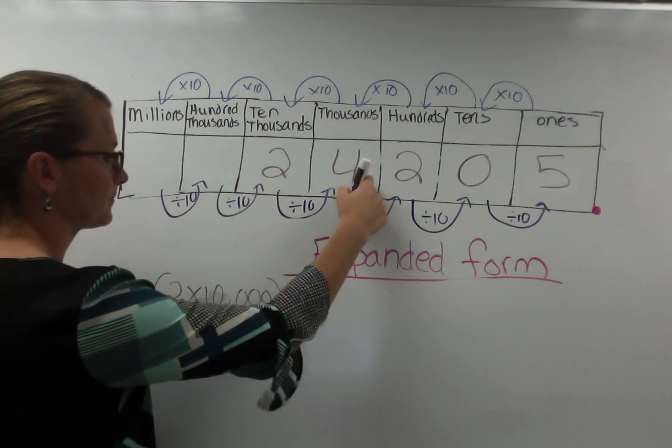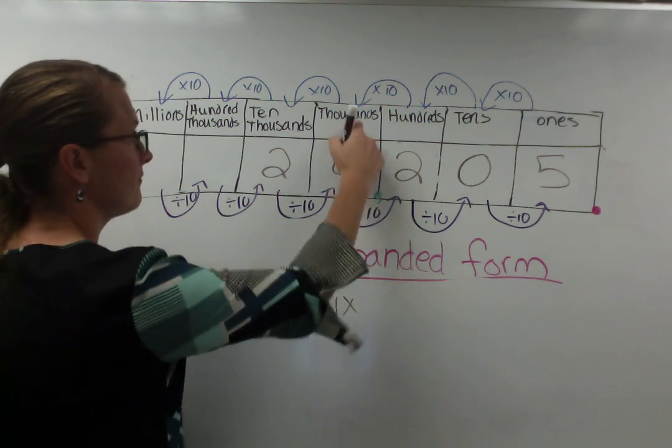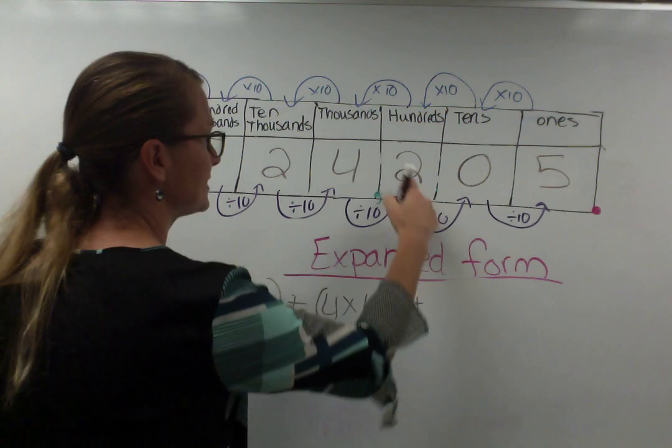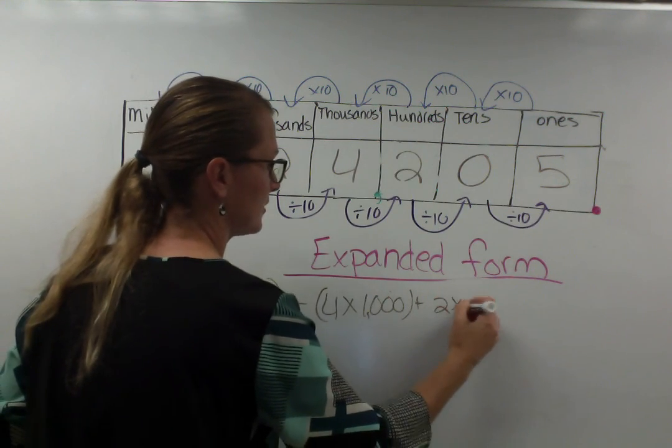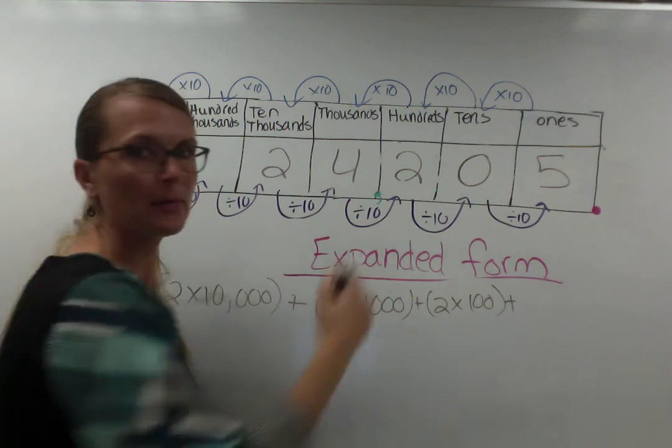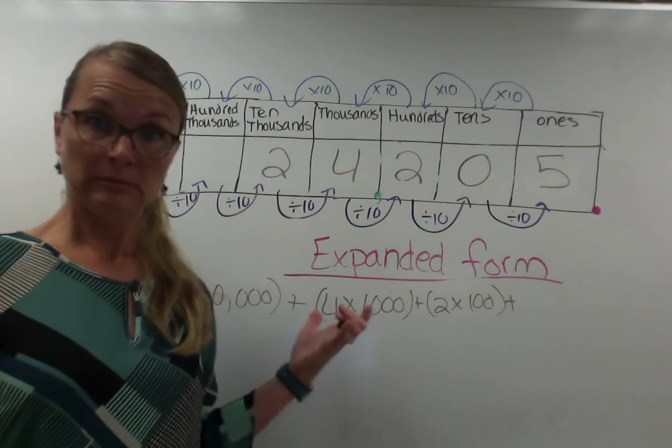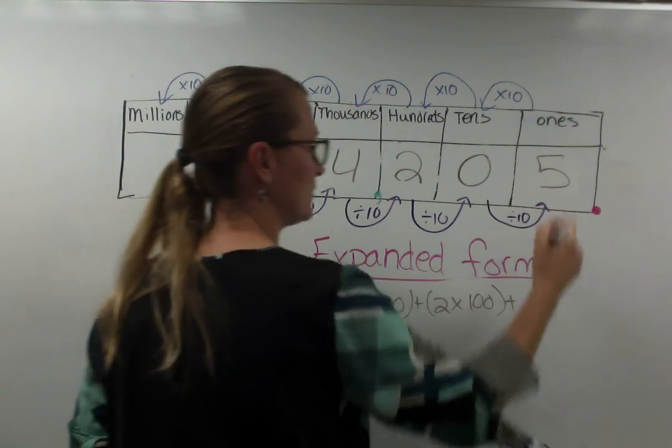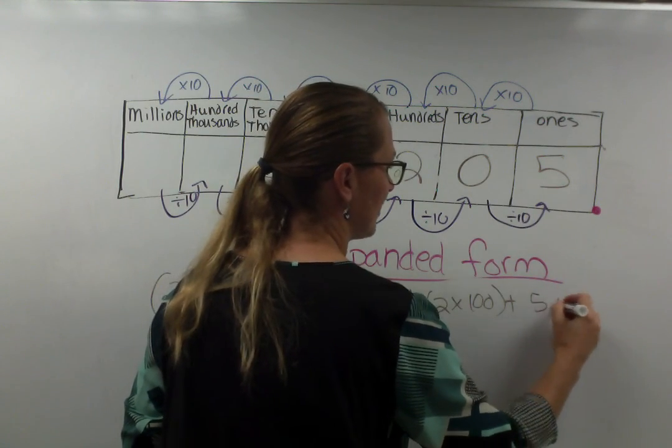Plus four groups of a thousand. Plus two groups of a hundred. Plus, hey, we have no tens. Do you know what I do? I don't write any tens because we don't have any tens. I'm going to skip right to ones. Plus five groups of one.